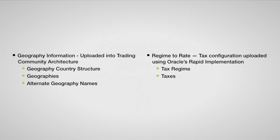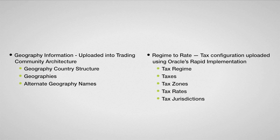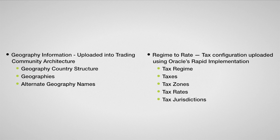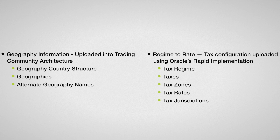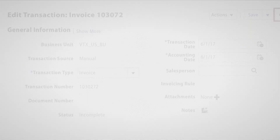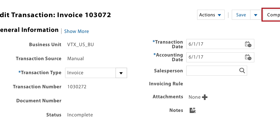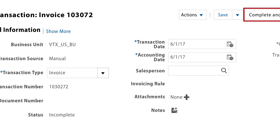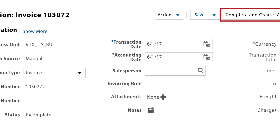After licensing Vertex for ERP Cloud, Vertex will provide you all the necessary files to upload the geographies and the regime-to-rate setups into Oracle. After configuring Vertex with Oracle ERP Cloud, tax can be calculated for both receivables and payables transactions.